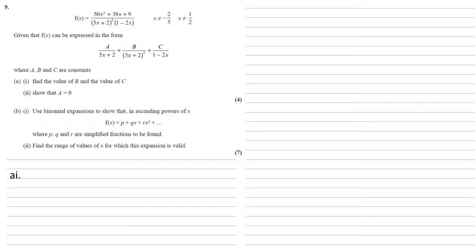To do this we're going to need to get all those denominators the same. We would need to multiply the first fraction with the a on it by another 5x plus 2 and the 1 minus 2x. The b would need to multiply by 1 minus 2x and the c by 5x plus 2 all squared.